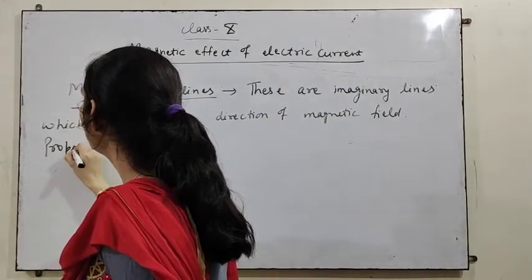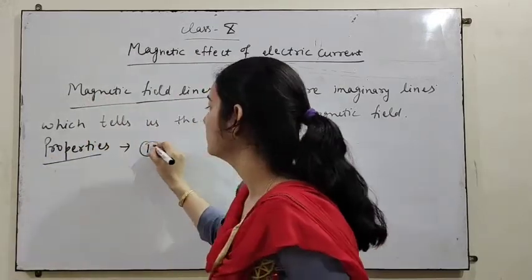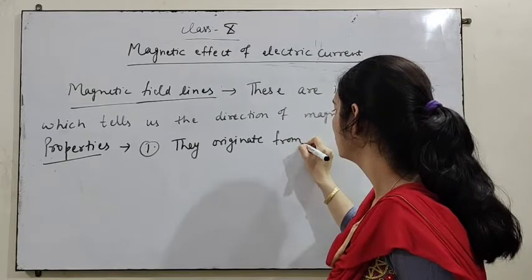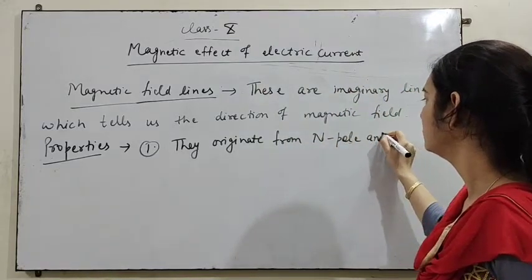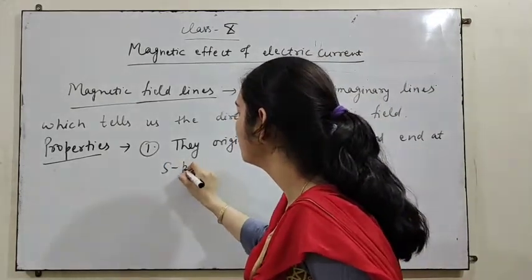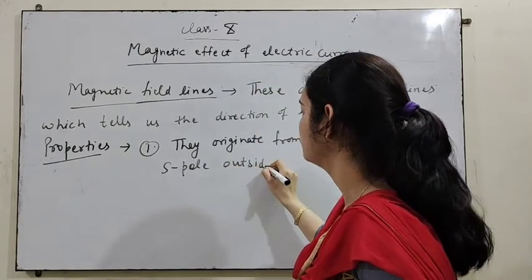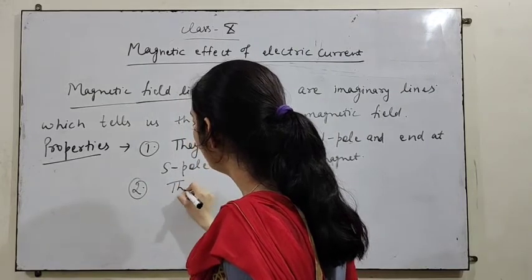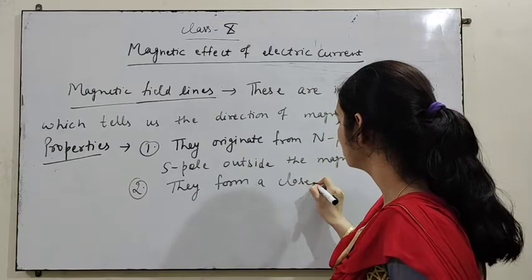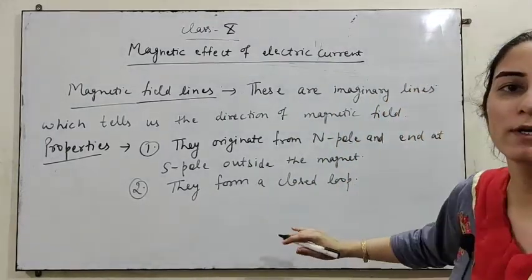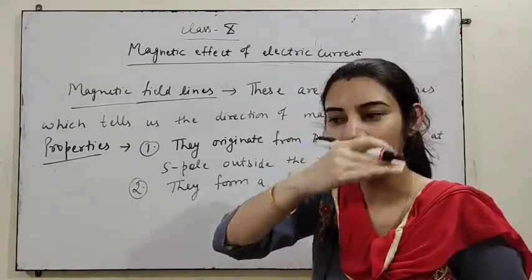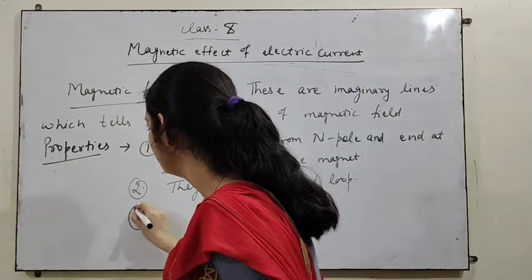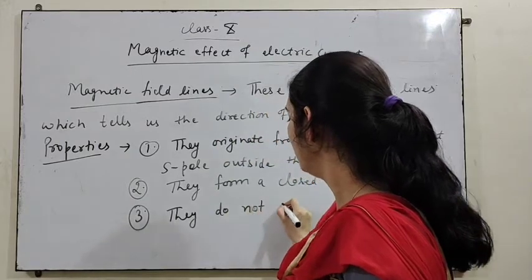What are the properties of magnetic field lines? Number one: they originate from the North Pole and end at the South Pole outside the magnet. Number two: they form a closed loop — from North Pole to South Pole outside, and from South Pole to North Pole inside the magnet.